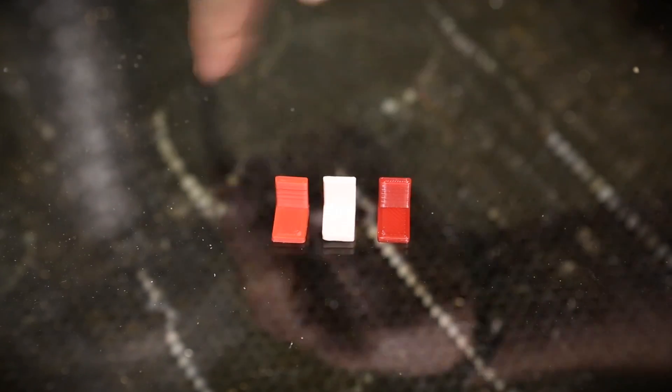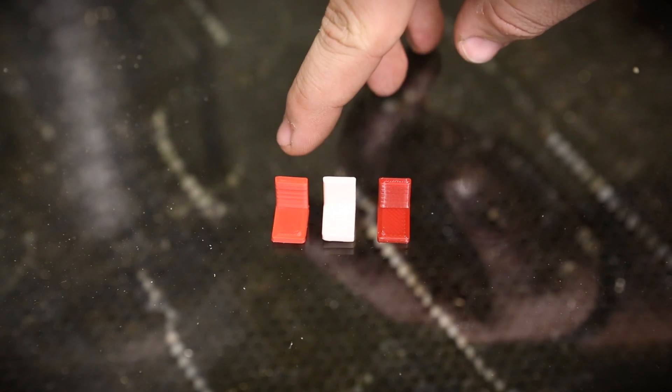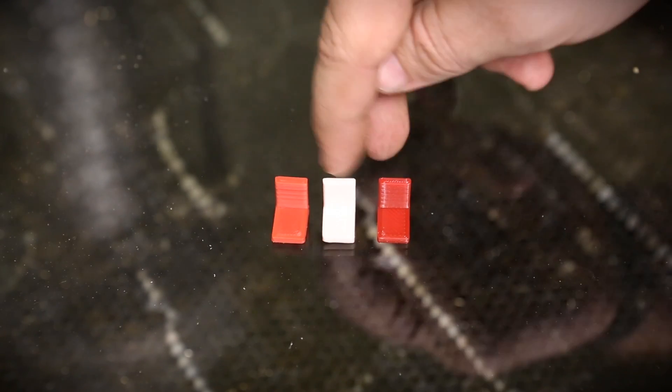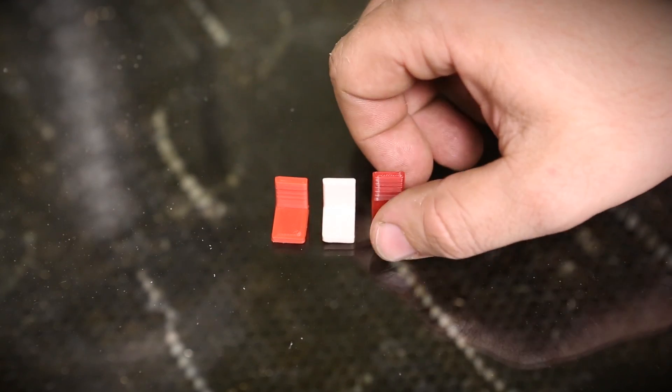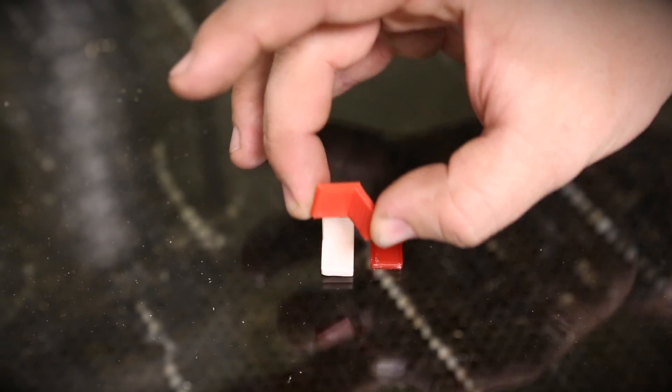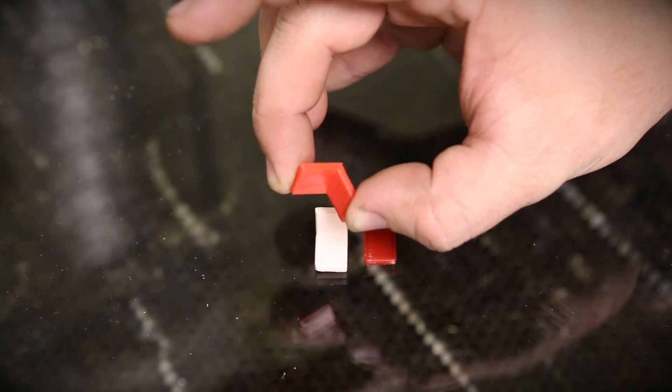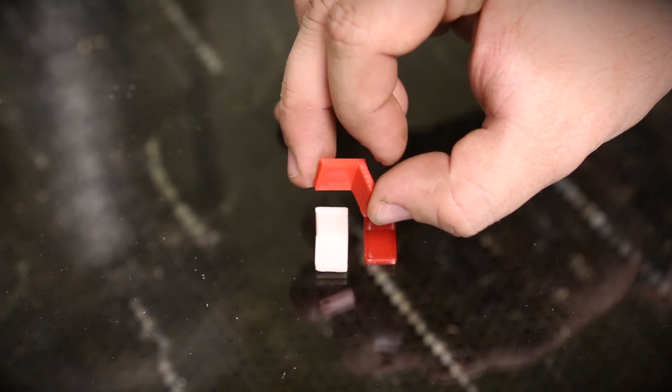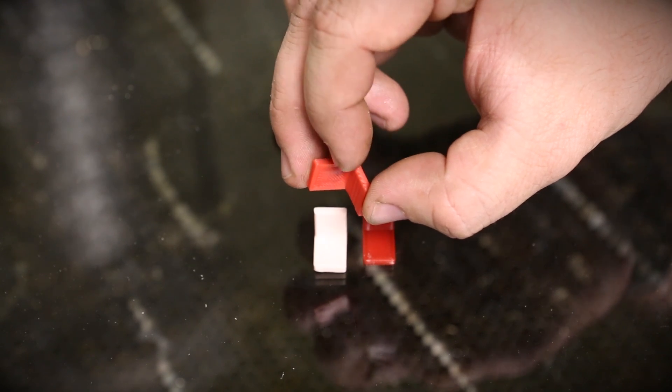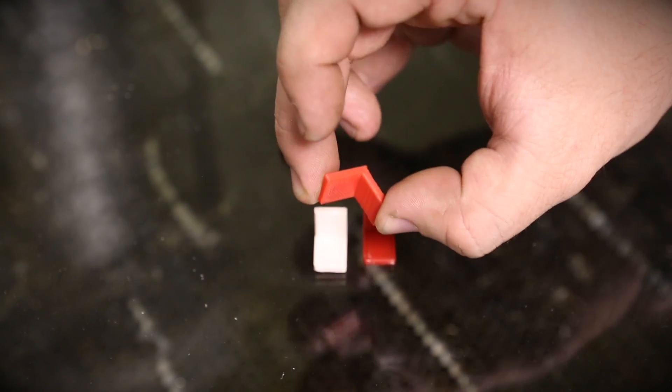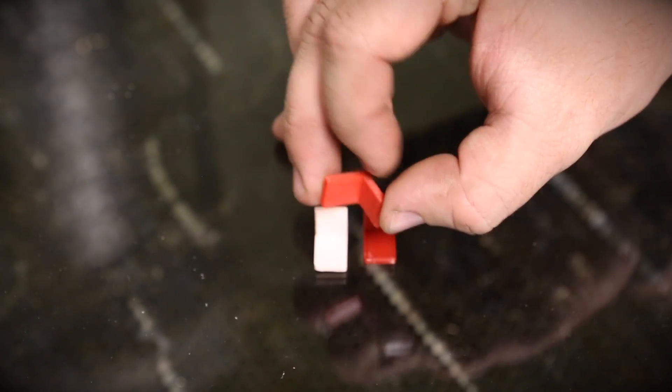So what I've done here, in order to compare the properties of each of these materials, is I've printed the same L bracket in each of the three: ABS, PLA, and NinjaFlex. The first thing I'm going to do is just pick up each of these, and between two fingers like this, I'm going to try to snap it in half, and I imagine it'll happen right at the corner where it stops being with the grain and starts being against the grain.